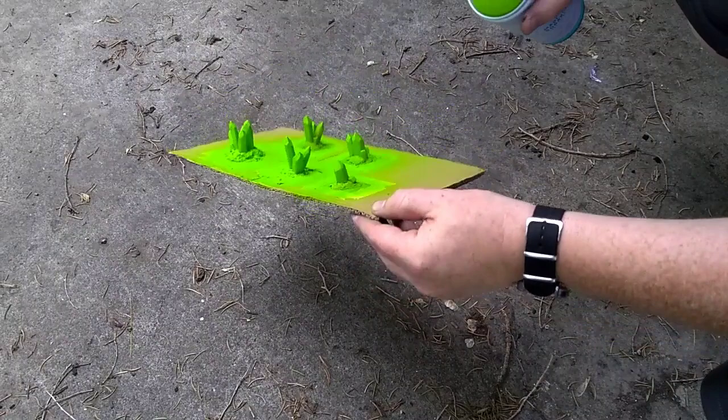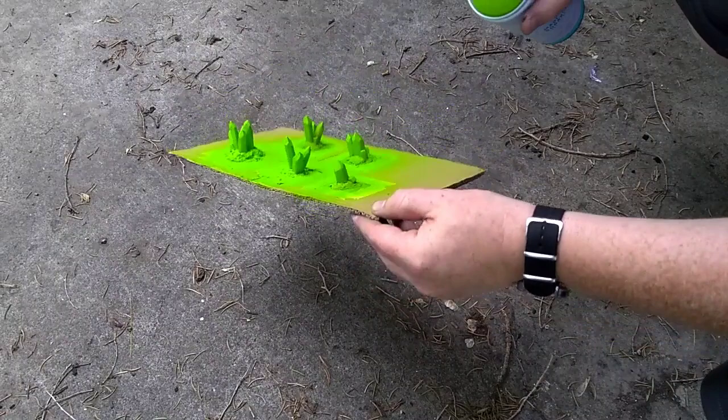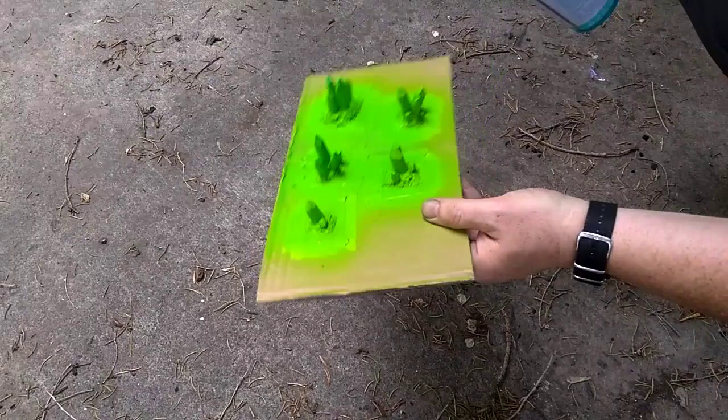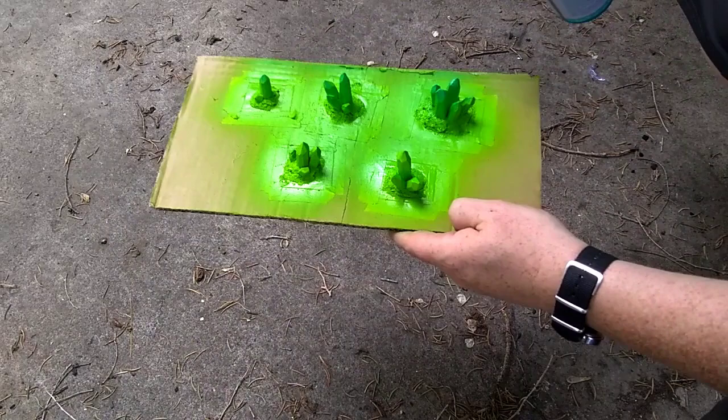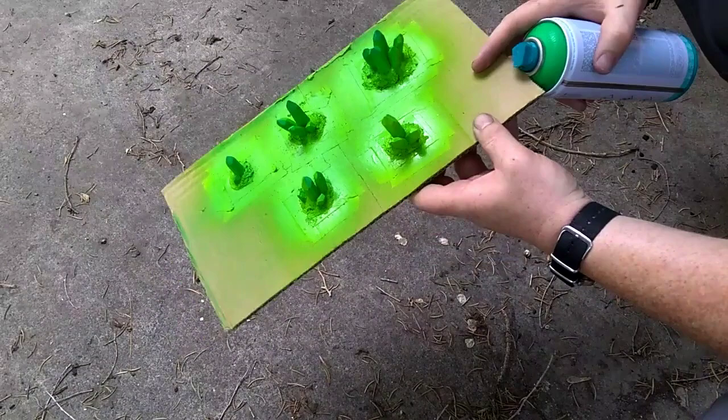Next I grab my second color. For these crystals I used a medium green. I believe it was called Spearmint. I try to be careful and spray just the tops of the crystals. This is hard to do but the end result is worth it. We are going for a graduated look which looks excellent when done with these spray cans.